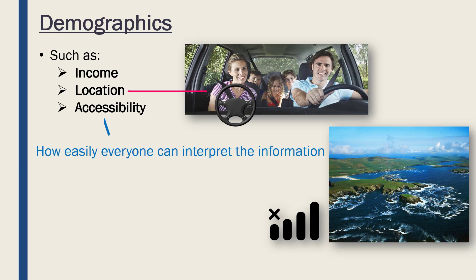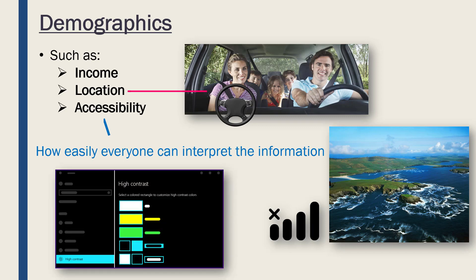Finally, accessibility is how easily everyone is able to interpret your information. Everyone has individual needs — for example, not everyone has good eyesight. If someone has limited eyesight or is colour blind, as many men in particular are, you might want to adapt your presentation by changing colours to be more high contrast. Software can often be changed to high contrast mode, making colours much more distinguishable and making the presentation more accessible to certain people.